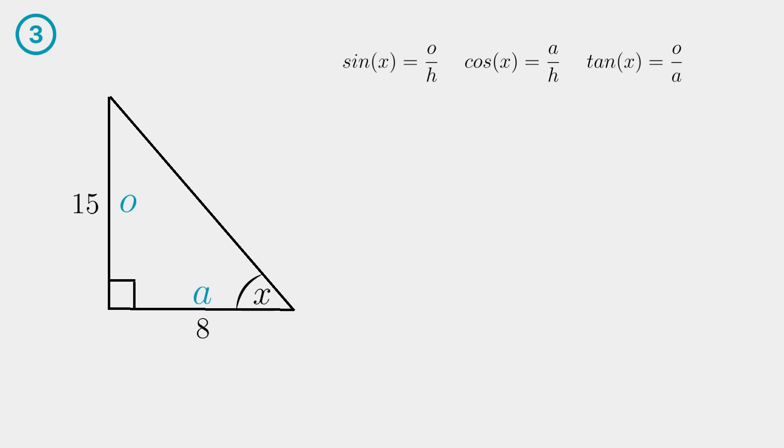The last example wants us to calculate the angle X. Yet again we have a right angle triangle so we can use the three basic trig functions. The side opposite of angle X is fifteen and the adjacent side is eight. So we have O and A so we can use the tangent function.